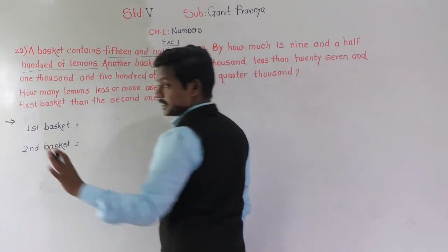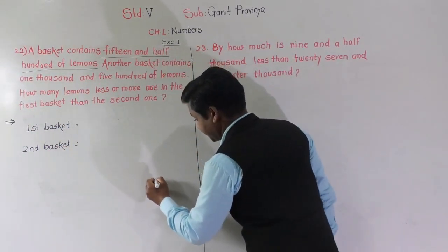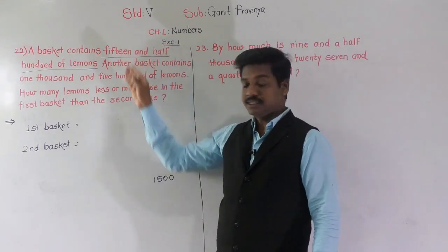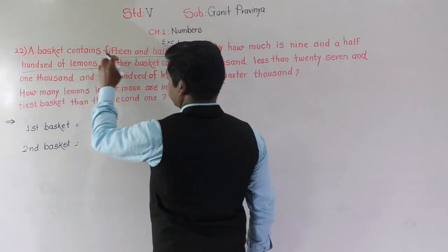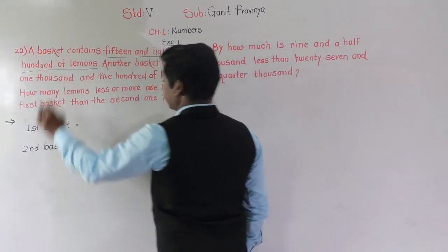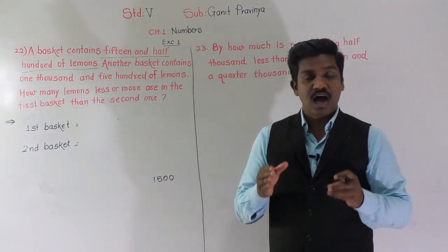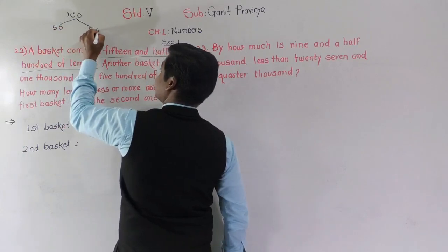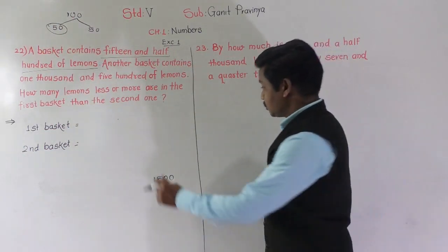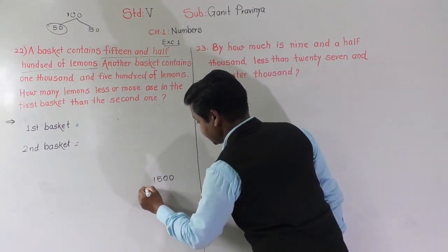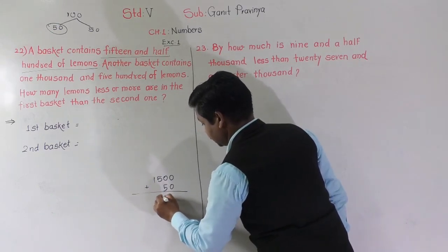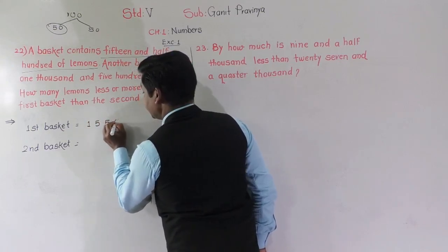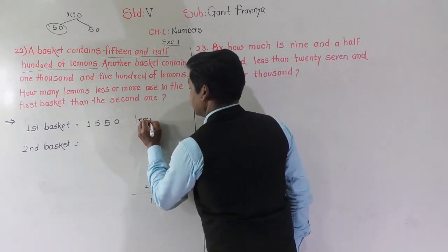15 and a half hundred means 15 complete hundreds. 15 hundred means after 15 there are two zeros, so this is 1500. And half hundred — half hundred means half of 100. When we make two parts, each part is 50. So half hundred means 50. So 15 and a half hundred means 1500 plus 50, which is 1550. In the first basket there are 1550 lemons.